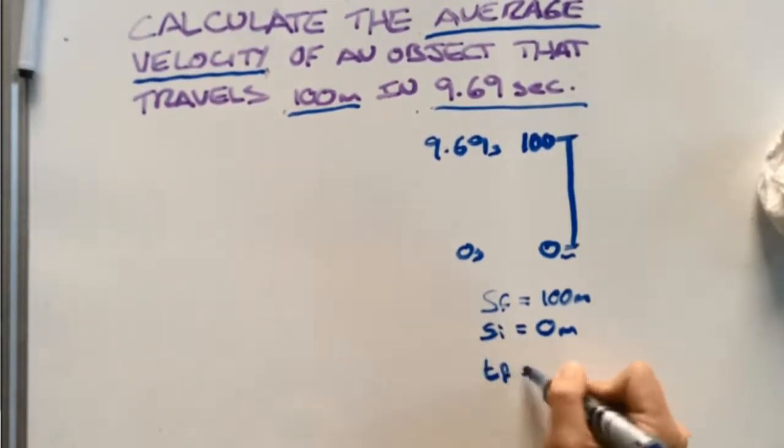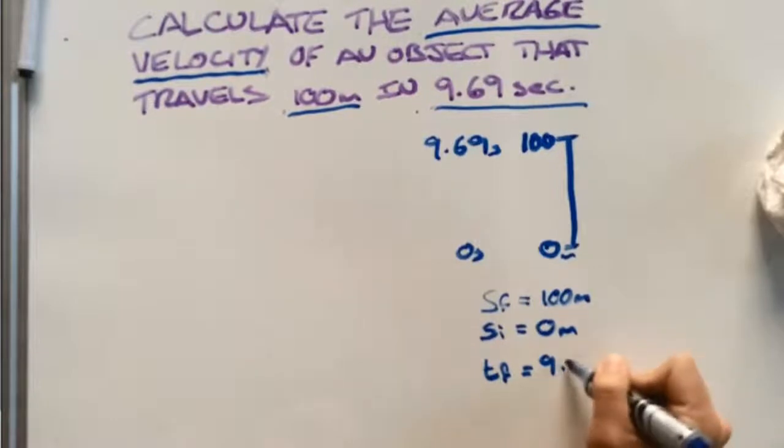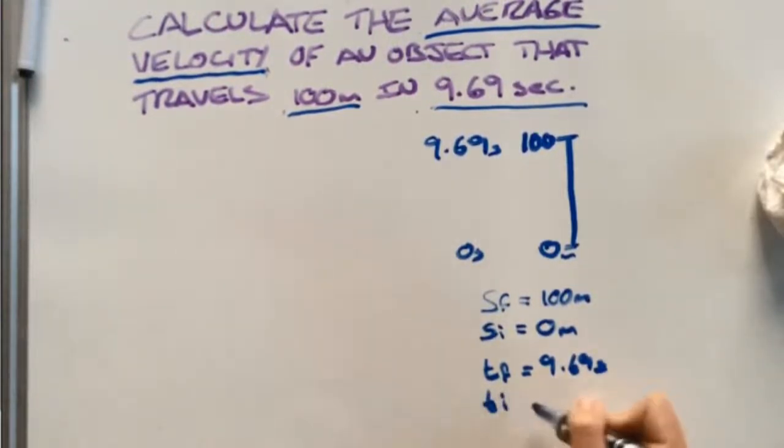Our final time is going to equal 9.69 seconds, and our initial time is going to be zero seconds. And we want to find the average velocity.